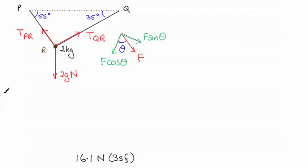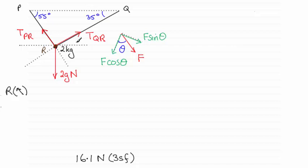I'm going to resolve in the direction of RP. I'll mark that in and create some dotted lines: one extending line PR, another extending QR, and a horizontal line. I need to find either the angle between these dotted lines for when it comes to resolving. This angle in here will be 35 degrees because it's alternate to the one up here, with two parallel lines. So if that's 35 degrees and this is 90 degrees, then this must be 55 degrees.